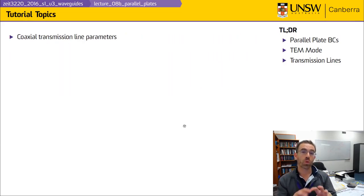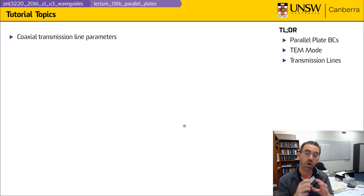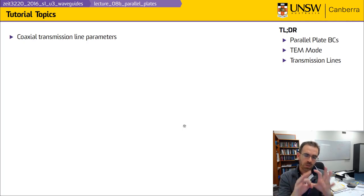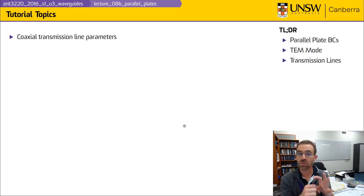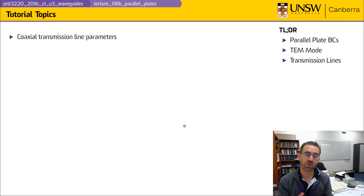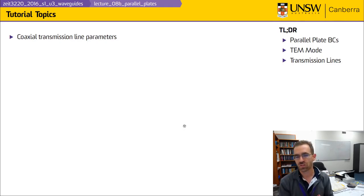In the tutorial, you're asked to go through the same set of calculations for a coaxial transmission line. We've looked at a parallel plate here; next, you're going to look at a coax. You already know how to solve for the electric field and the magnetic field from earlier tutorials. You can use those answers to get the capacitance per unit length, inductance per unit length, and characteristic impedance — and they should agree with the formulas you've already seen in this class or in your labs.